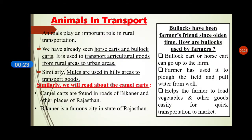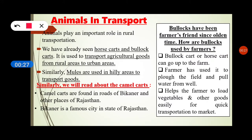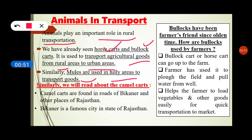Today we will discuss our next topics: Animal Transportation and Urban Transportation. Animals play an important role in Rural Transportation. We previously discussed horse carts and bull carts, which are used to transport agricultural goods from rural areas to urban areas. In hilly areas, mules are used to transport goods.